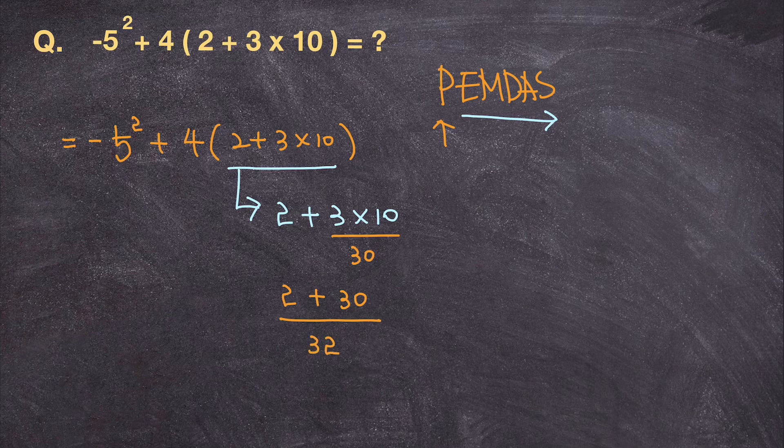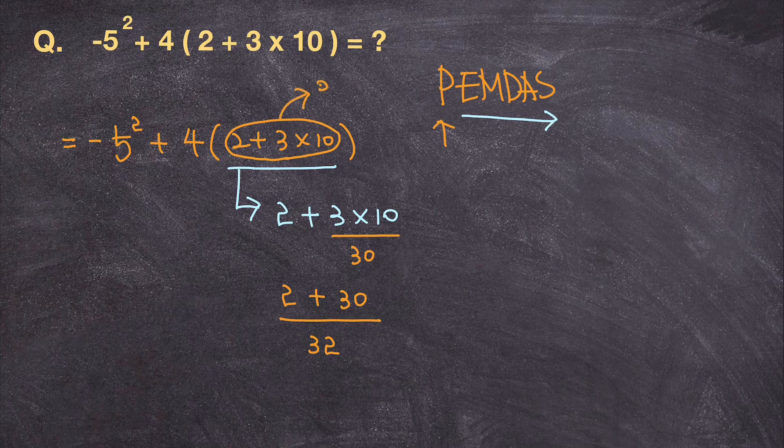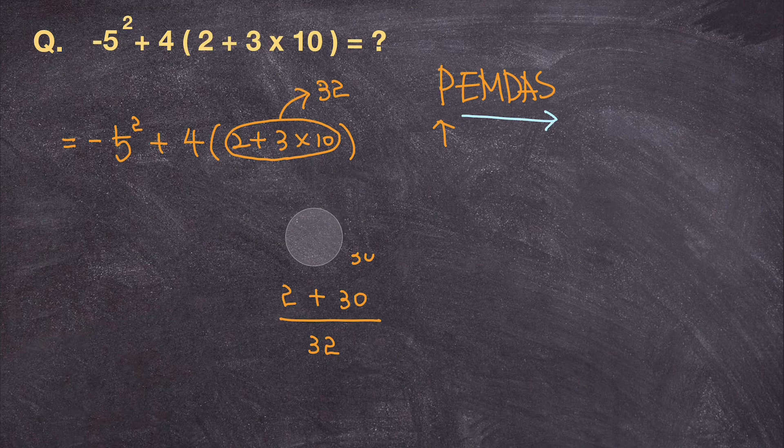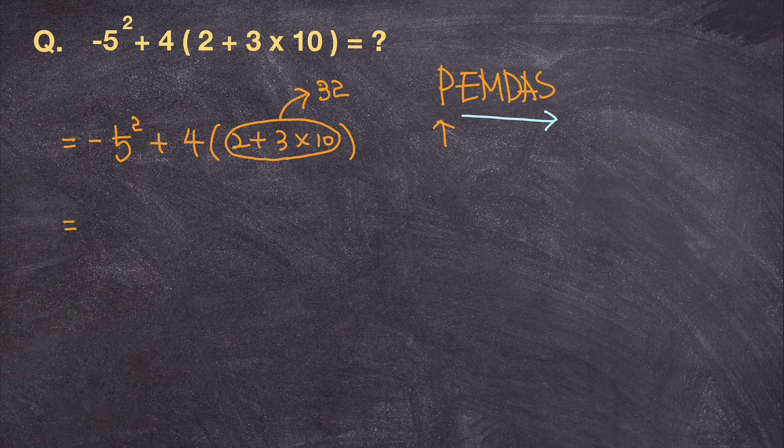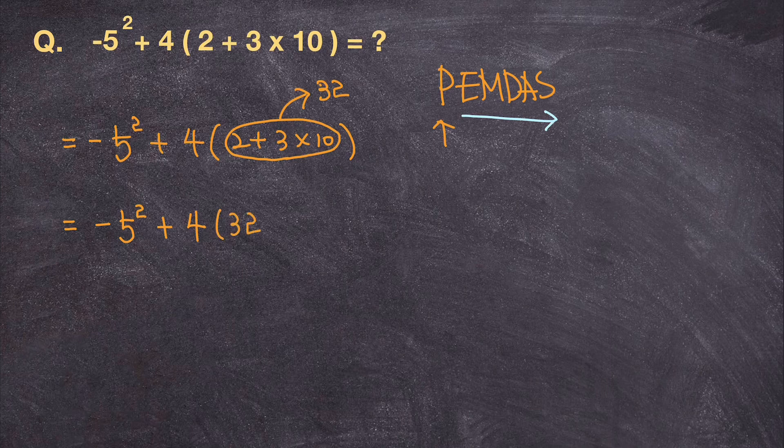So I can just easily replace this mathematical expression with a number 32 and be done with the parenthesis part of this mathematical expression. So let's rewrite the whole thing. I have negative 5 squared plus 4 times 32.